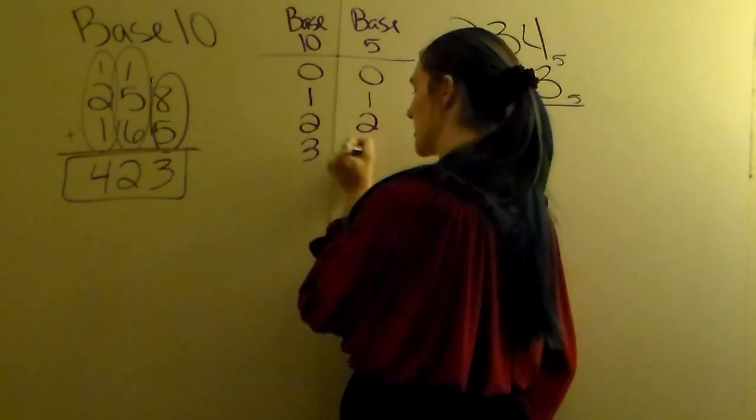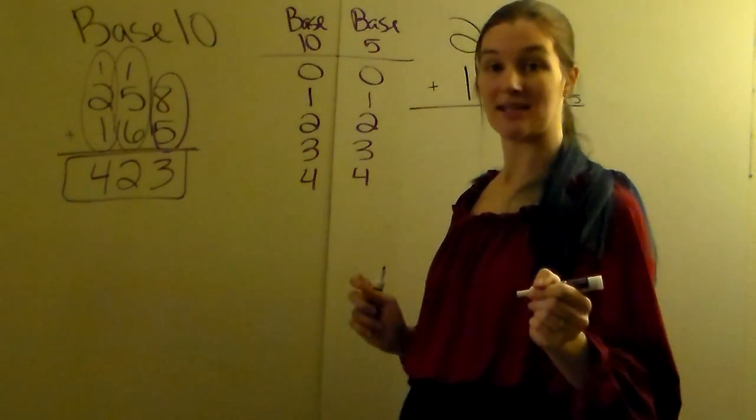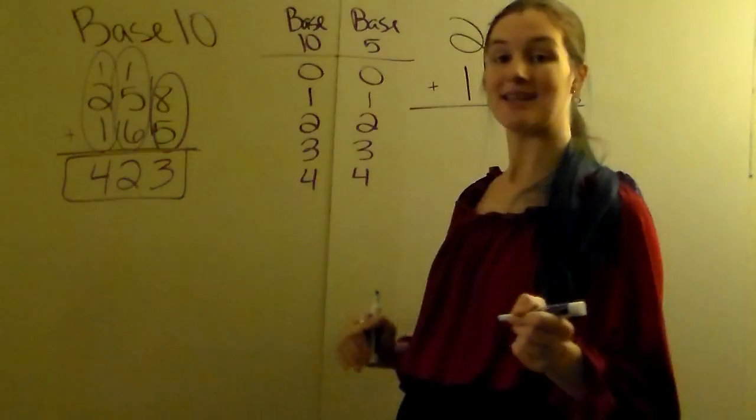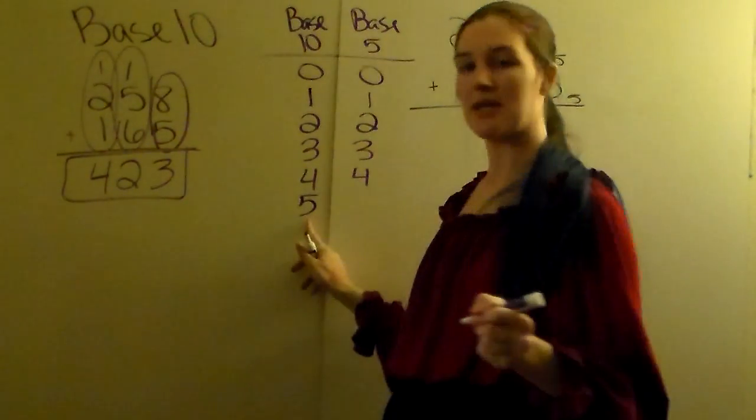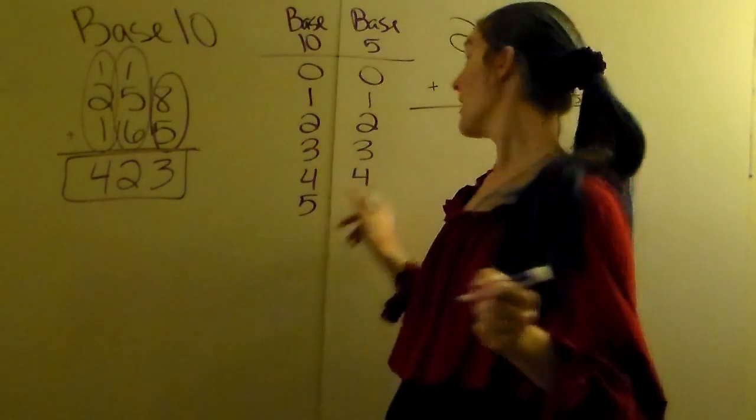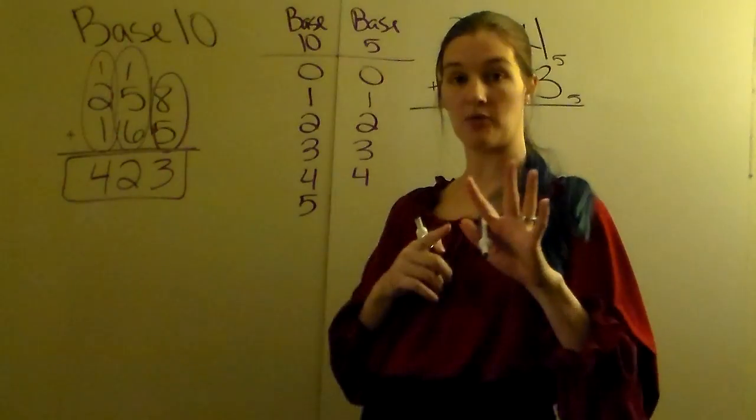3 and 4, until you get to your base, they are all the exact same. Once you hit the fifth number in base 10, base 5 you're only allowed 0, 1, 2, 3, and 4. They can only have those symbols, they cannot have any other symbols.